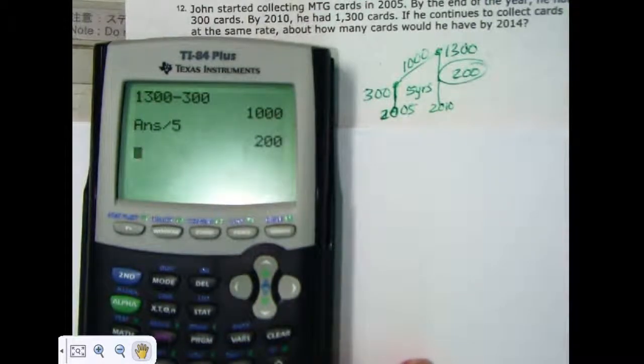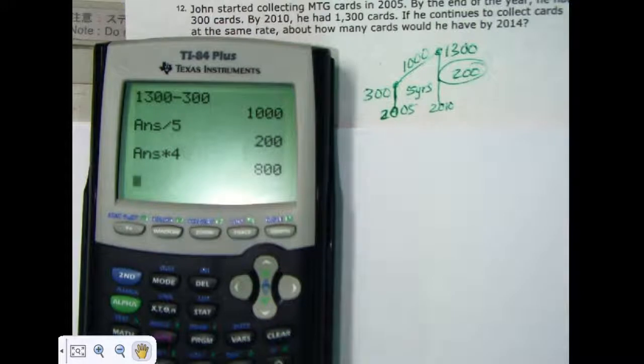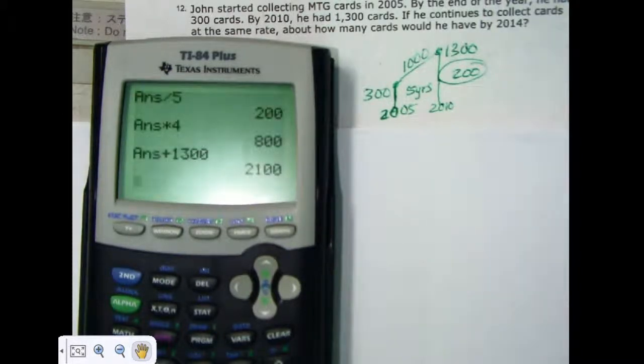Well, how many more years does he have? He's got four more years. So we're going to multiply that 200 by four. He should add another 800 to his collection for a total of 2,100. And because we add that to the 1,300 that he had in 2010.